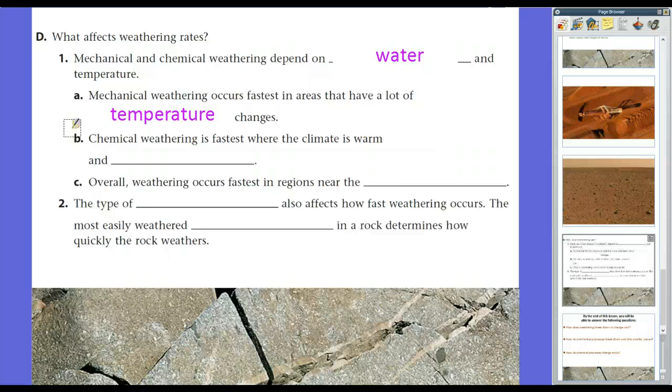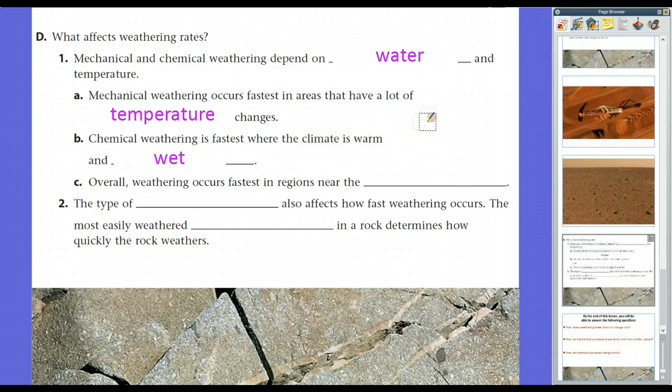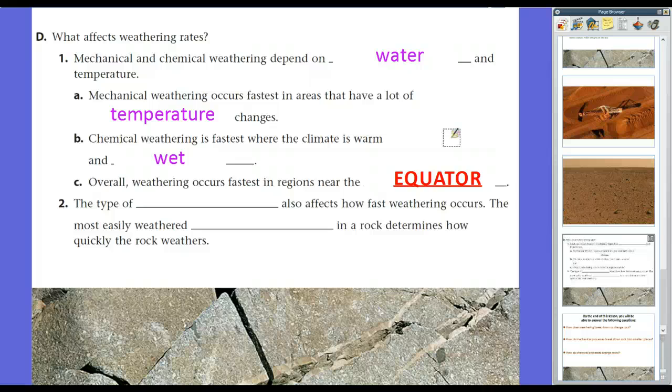Chemical weathering is fastest when the climate is warm and wet because there's a lot of oxygen molecules moving around. There's a lot of water present to dissolve. Now, overall, weathering occurs fastest in regions near the equator. Now, there are places up north where you see ice wedging and things like that. That happens there because it's further north because of those rapid temperature changes. But, most often times, you will see rocks weathered and soil weathered the most near the equator.